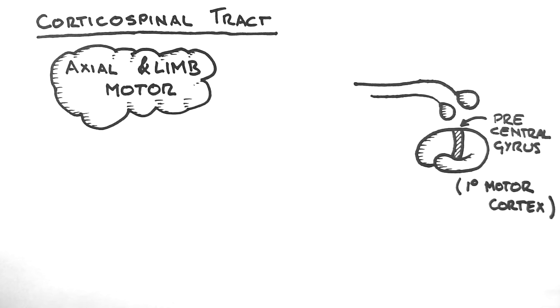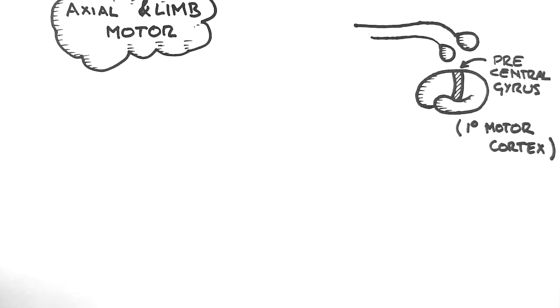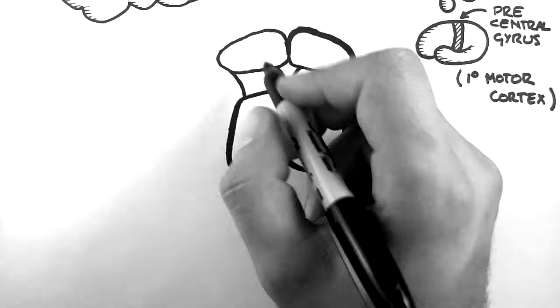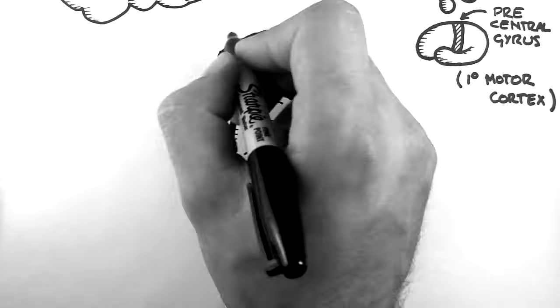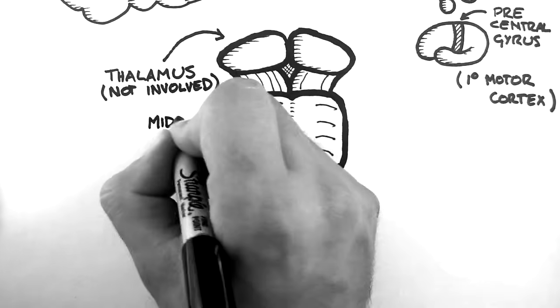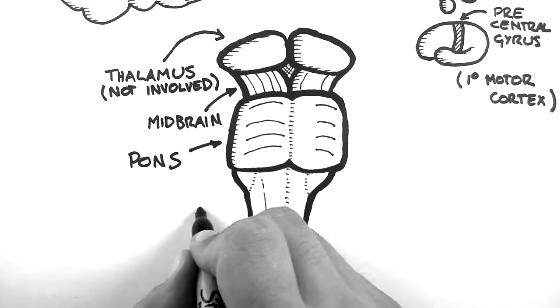They leave the cortex by descending through the internal capsule and into the brain stem. So I'll draw the brain stem here. Here is the thalamus, which is not involved in this pathway, the midbrain, the pons, and the medulla.